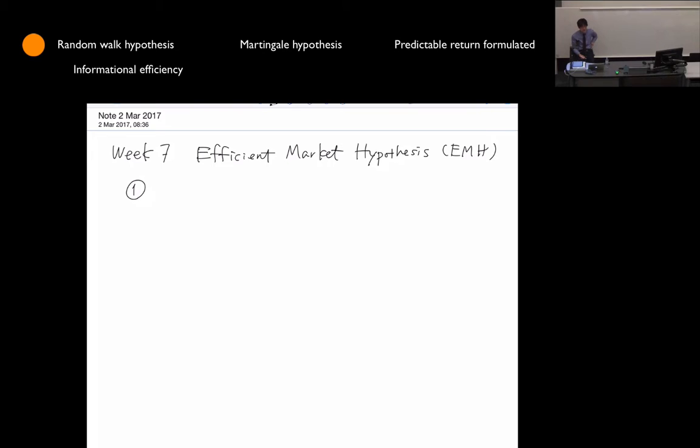First, there was an old image of this word, Efficient Market Hypothesis. And that was, there was an old interpretation or an old image. And that was a random walk hypothesis. That is, the stock price follows a random walk process. Or in other words, the stock return is an IID process.